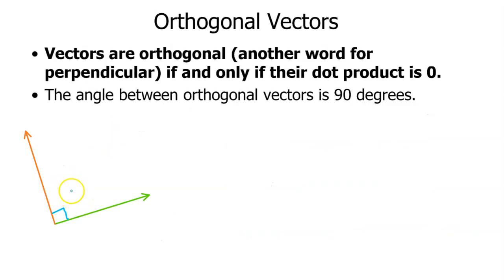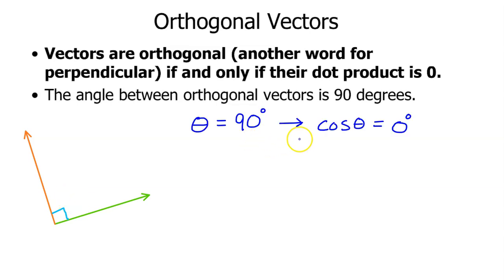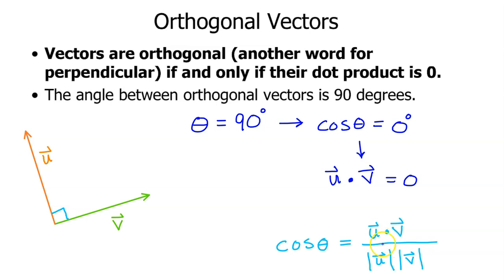Orthogonal is another word for perpendicular. Orthogonal vectors are vectors that are perpendicular, meaning the angle between them is 90 degrees. If theta is 90 degrees, that means cosine of theta equals 0. A fraction can only equal 0 if the numerator is equal to 0, so cosine theta will equal 0 only if the dot product is equal to 0. Vectors are orthogonal, or perpendicular, only if their dot product is 0.